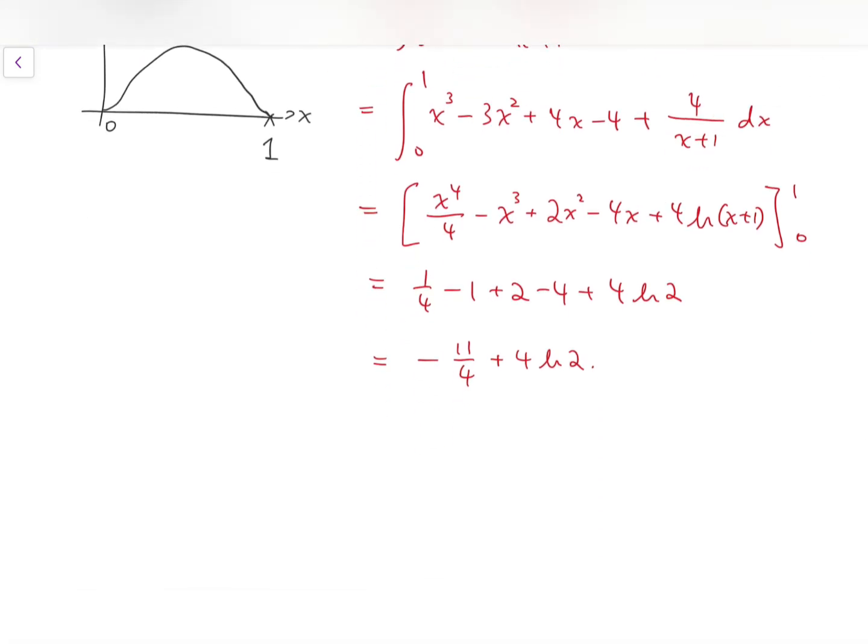Now that means our answer, minus 11 over 4 plus 4 times natural log of 2, is positive.